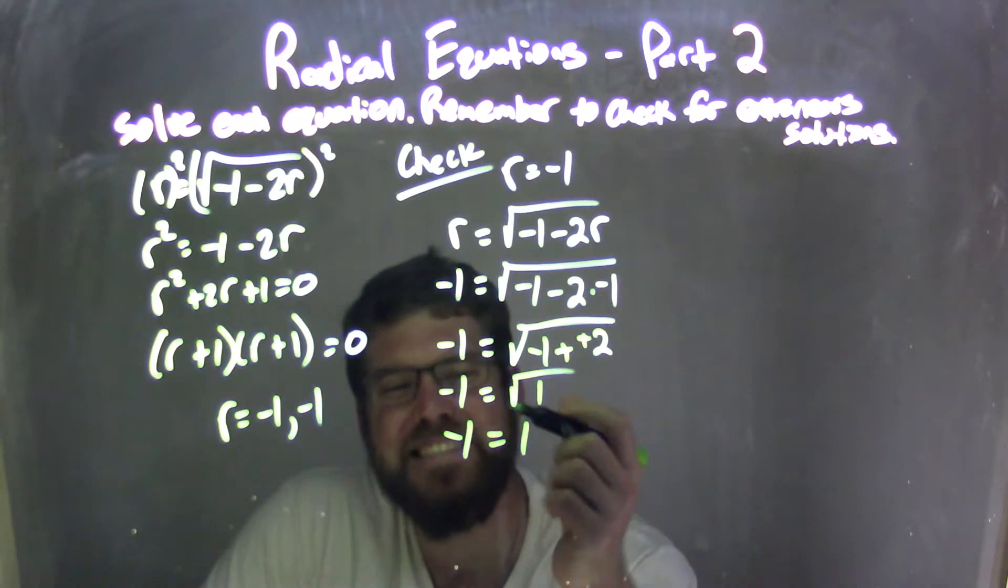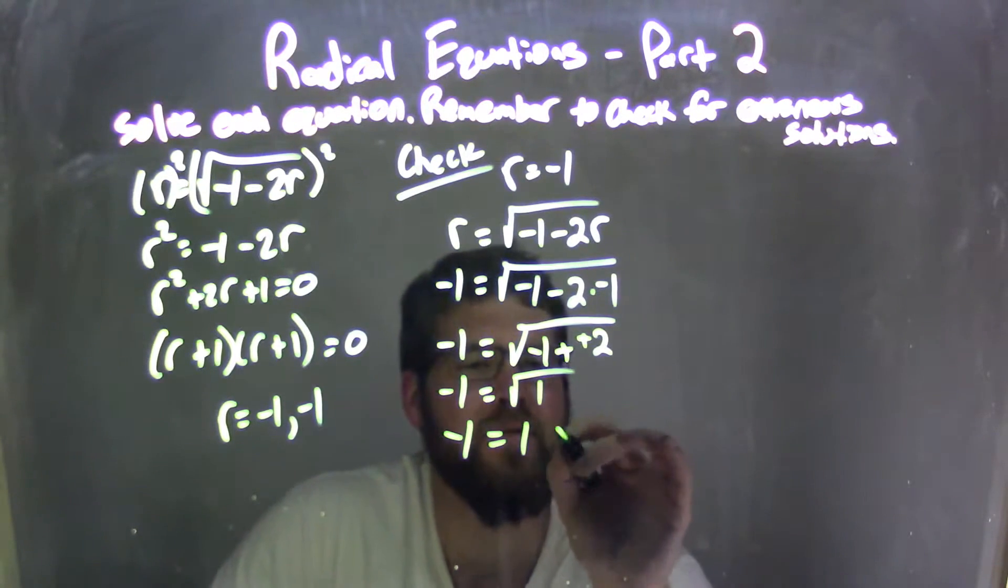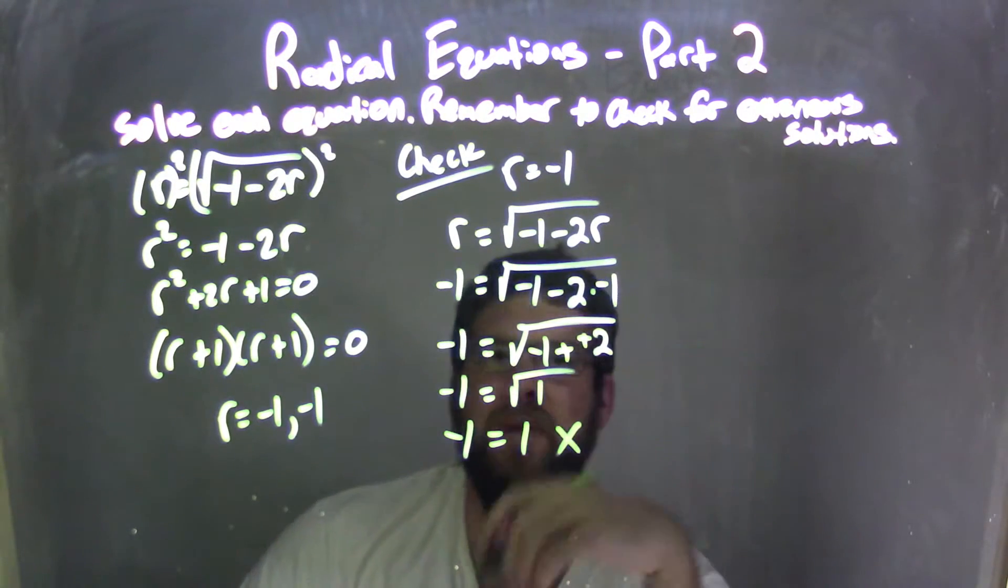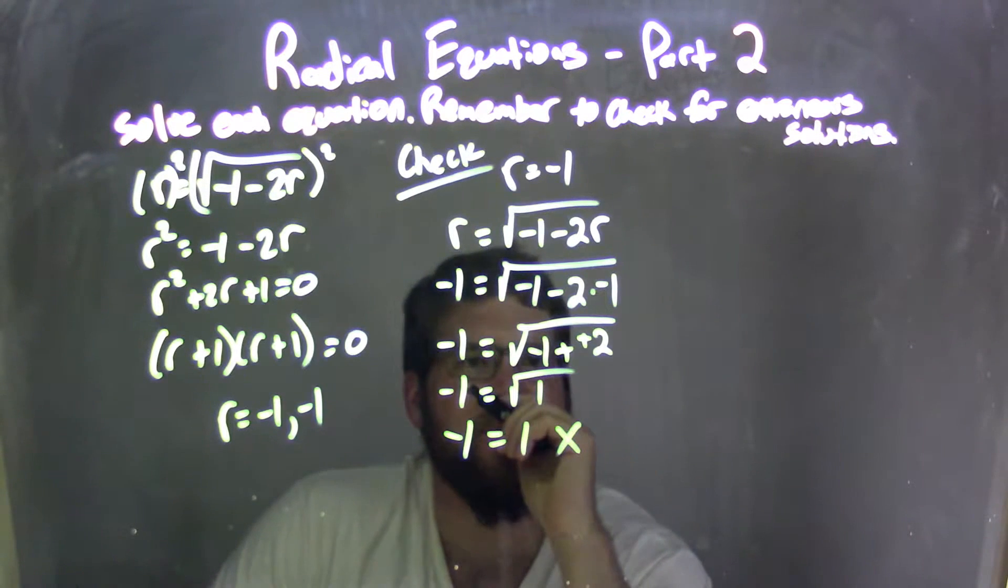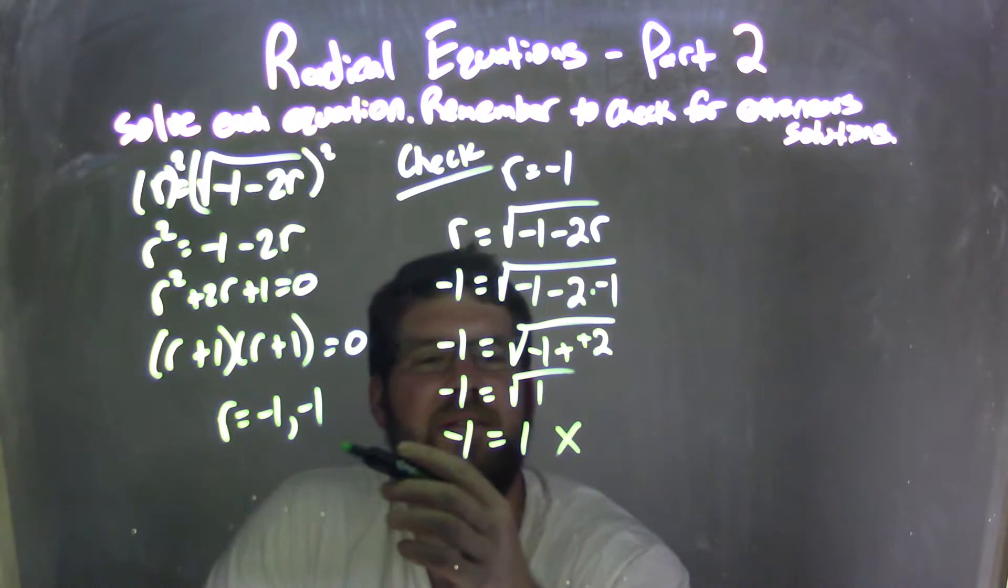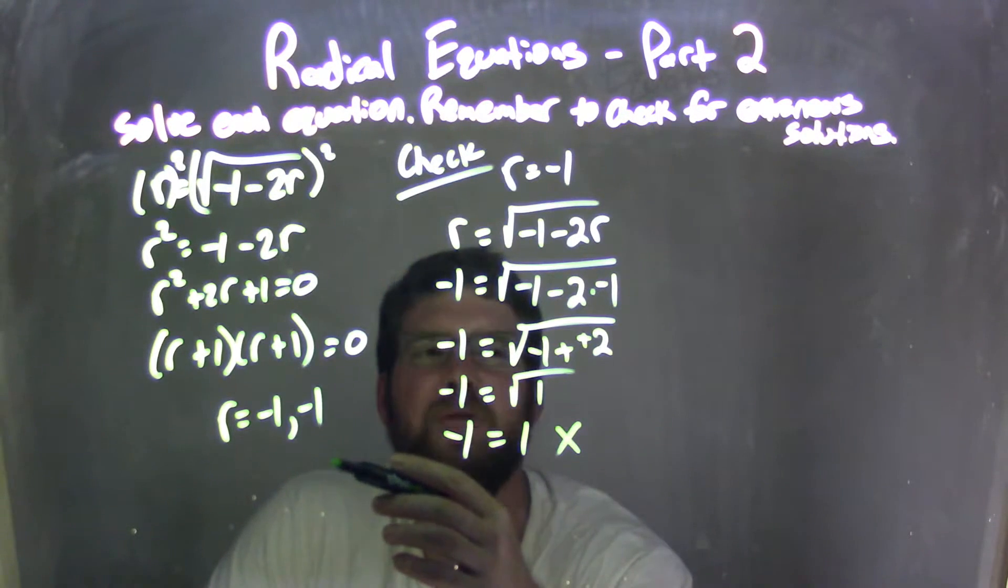Fantastic, but except the negative 1 does not equal a positive 1. That's incorrect. And so, since it's incorrect, that means that's an extraneous solution. So negative 1 is an extraneous solution.